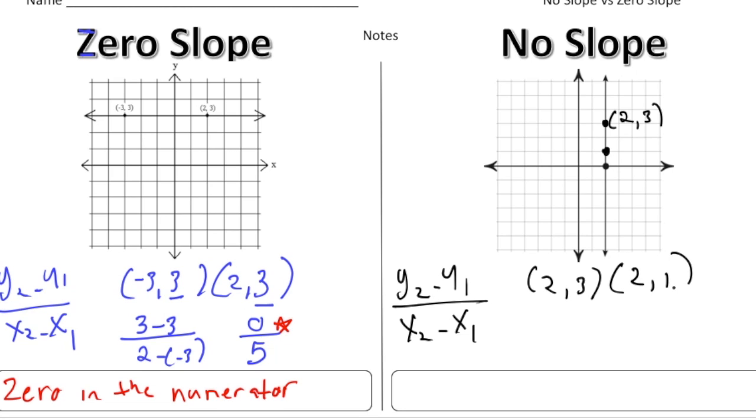So when I subtract the y's, it's going to be 1 minus 3 over, when I find the difference of the x's, it's going to be 2 take away 2. And if you notice this time, the numerator is negative 2, but the denominator is a 0. And again, that's a key characteristic of no slope. Is the 0 in the denominator. 0 in the denominator.